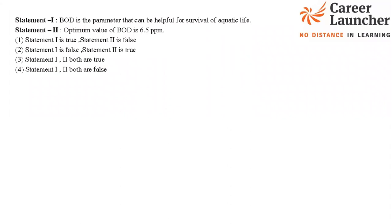This is a direct memory-based question from Chemistry in Everyday Life about BOD (Biological Oxygen Demand). Statement 1 says BOD is a parameter helpful for survival of aquatic life — this is correct. Statement 2 says the optimum value of BOD is 6.5 ppm — this is wrong; the optimum value is 10–15 ppm. So statement 1 is true and statement 2 is false. The answer is option 1.